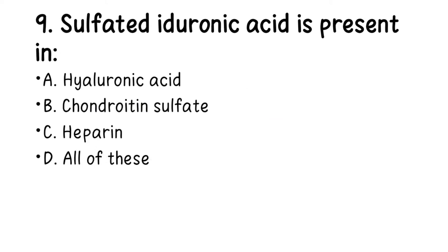Number 9. Sulfated uronic acid is present in: A. Hyaluronic acid, B. Chondroitin sulfate, C. Heparin, D. All of these. You will find sulfated uronic acid in all of them.